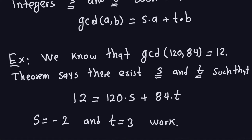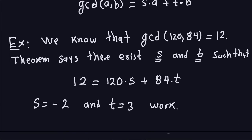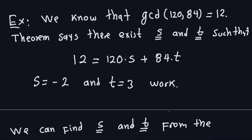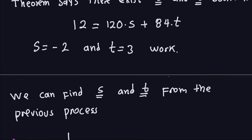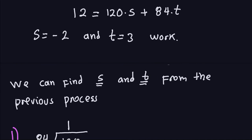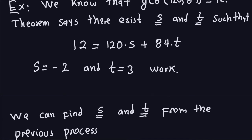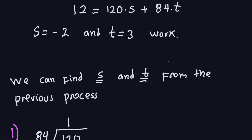But how do we arrive at those numbers? What I'm going to do now is show you how to arrive at these two numbers if we already computed the greatest common divisor between 120 and 84. We can find s and t from the previous process — using basically the Euclidean algorithm. So let me recall what I did.